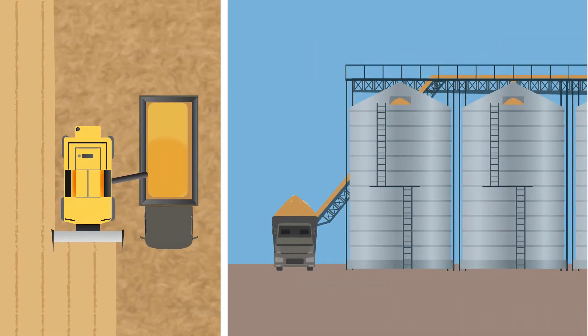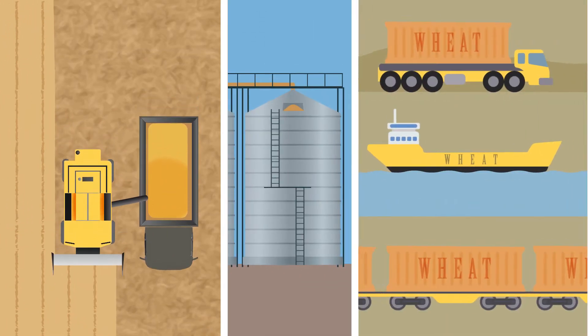During wheat harvest, the crop is sent to storage elevators, where it waits to be distributed to mills.